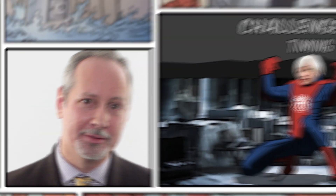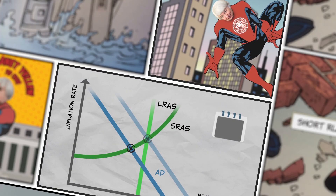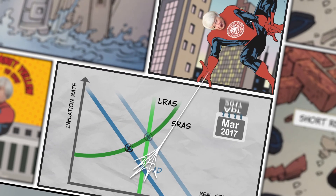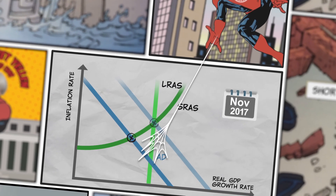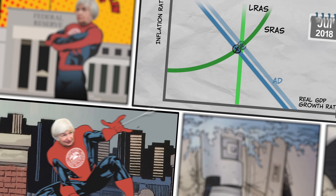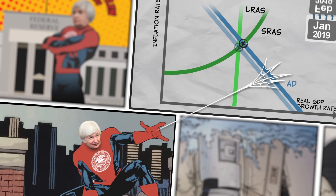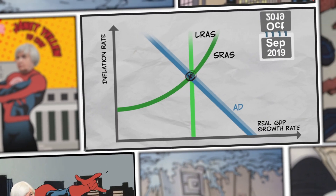Second, timing. The Fed's actions take time to affect the economy — usually some six to 18 months after the fact. So even if the Fed correctly identifies the problem and acts right away, the situation may have changed by the time its policies begin to take effect.